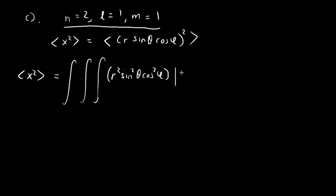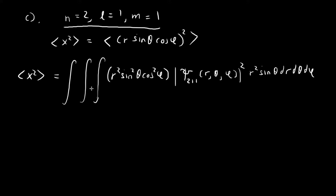We put in the function ξ₂₁₁, which is a function of r, theta, and phi, squared. The differential for spherical coordinates is r squared sine theta dr dθ dφ. The bounds for r go from 0 to infinity, for theta from 0 to pi, and for phi from 0 to 2 pi.